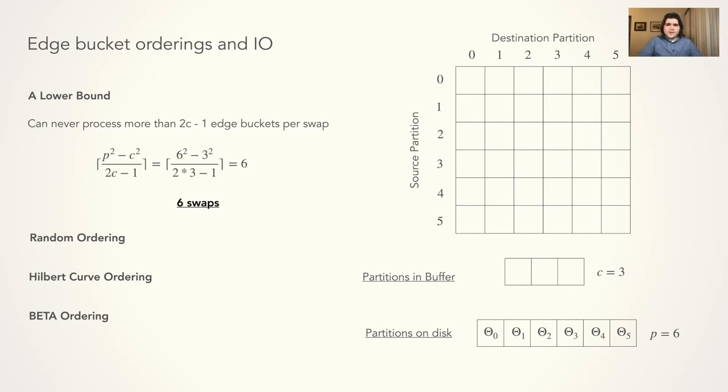Looking at different orderings for this example, first taking a random order over the edge buckets, this will result in a total of about 23 swaps. Applying an ordering generated by the Hilbert space-filling curve, which has been used in prior graph processing systems such as Mosaic or in Frank Mischeri's cost paper, will result in about 12 swaps.